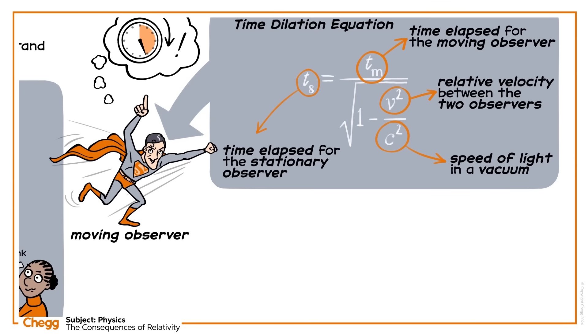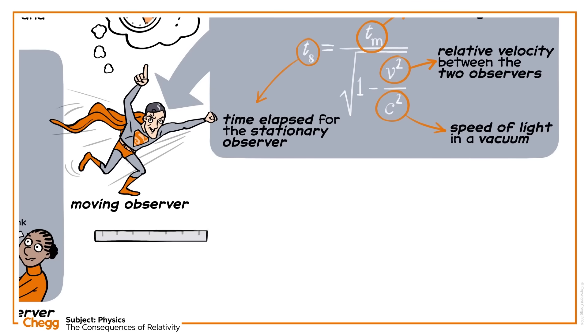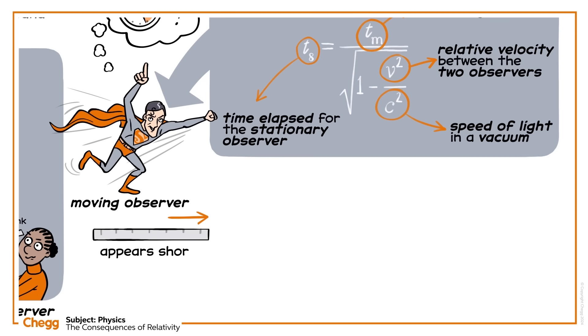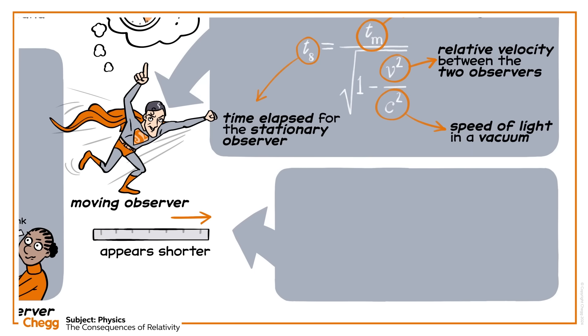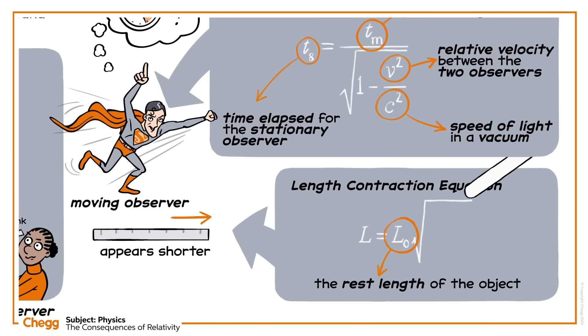It's not just time that's relative. An accelerating meter stick will appear shorter than a stationary one to a moving observer. Here's the length contraction equation. L equals L0, the rest length of the object, times the square root of 1 minus v squared over c squared.